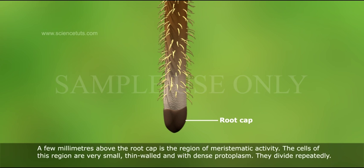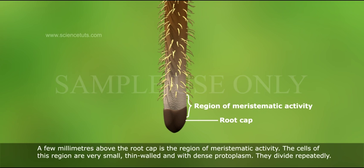A few millimeters above the root cap is the region of meristematic activity. The cells of this region are very small, thin-walled and with dense protoplasm. They divide repeatedly.